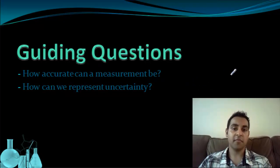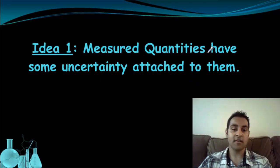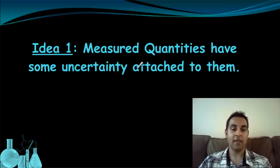Starting from there, we have two major ideas that we're going to approach in this lesson. The first idea is that measured quantities have some uncertainty attached to them. All measurements have some uncertainty attached to them. There's no way we can really get away from that.